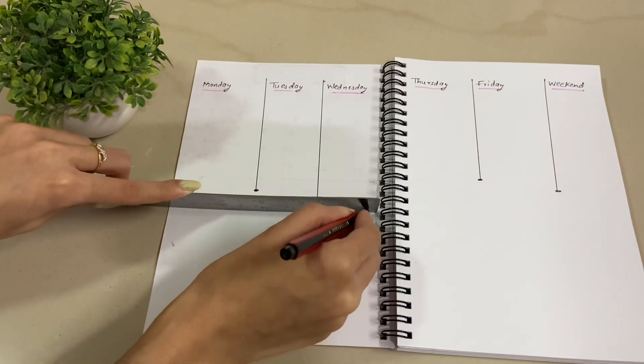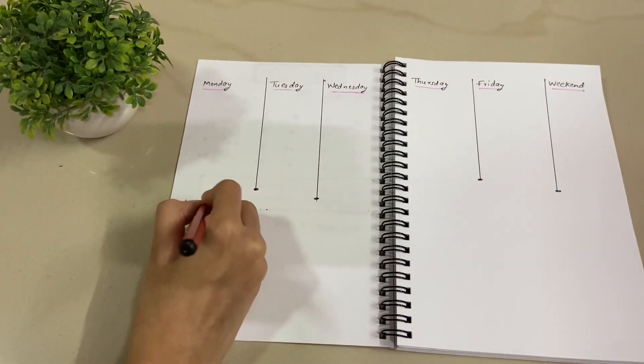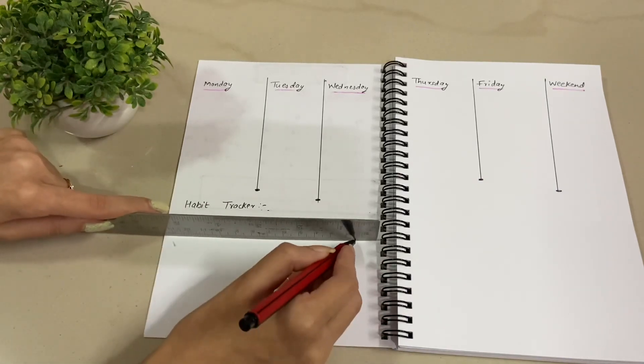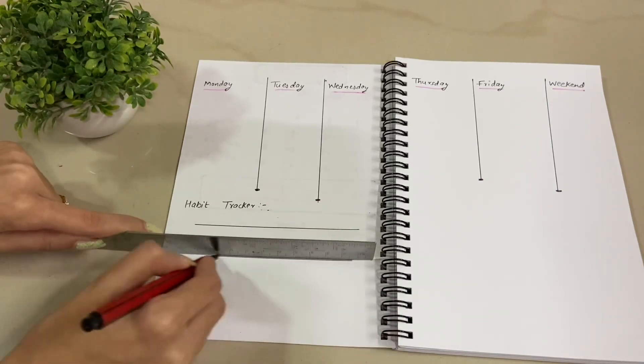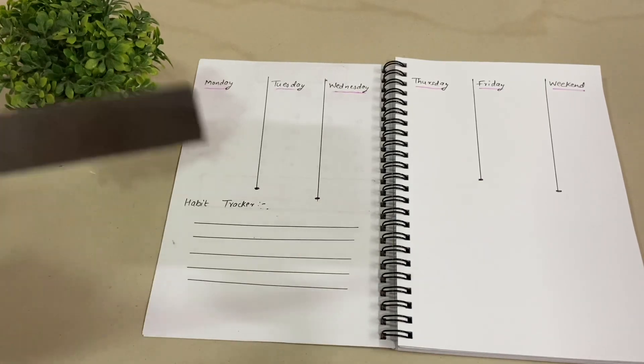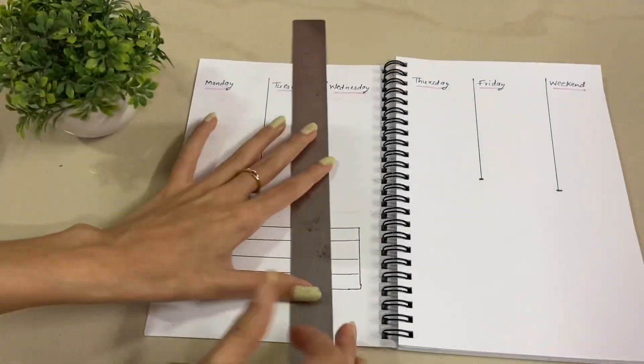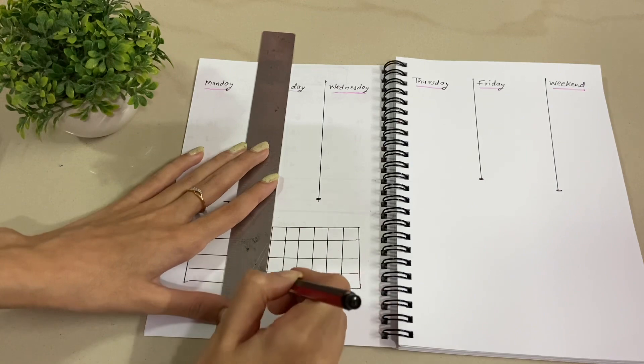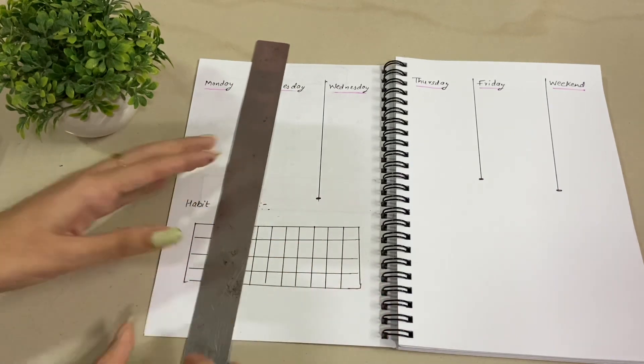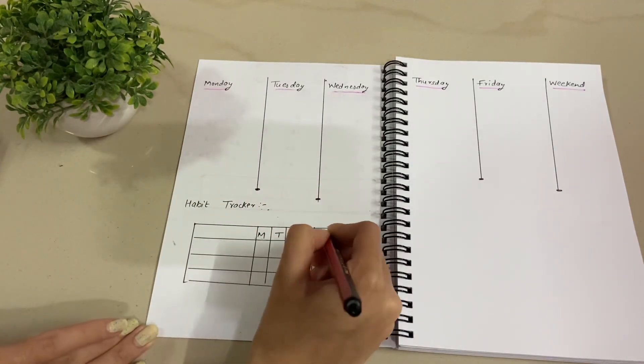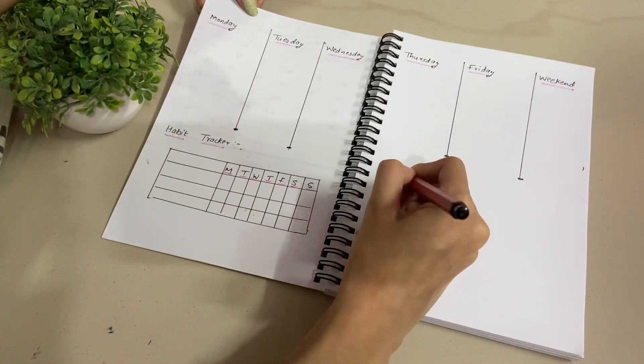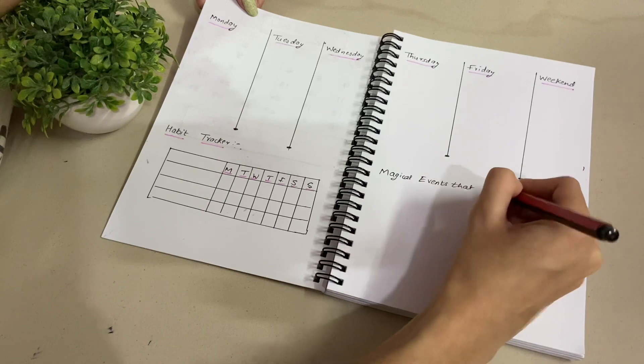Then on the bottom left corner I will make a box for habit tracking. So I will use a normal ruler and make some boxes. What I will be doing is on the left section I will write the habits which I want to track for this week, and then I have boxes for each day of the week so I can accordingly mark every single day. It is pretty self-explanatory.